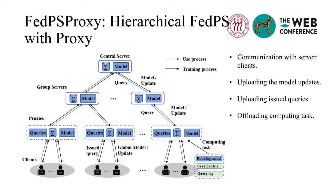Under this layered model, the operations are as follows. Communicating with server or clients: the central server cannot directly connect to the clients, but through group servers and proxies. Proxies are much fewer than clients, and there are a series of group servers responsible for communication and processing, thus solving the communication bottleneck. Uploading the model updates: when a client uploads the parameter updates, it first sends the updates to the proxy for aggregation, then the proxy uploads the aggregation to the group server, breaking the link between the updates and the user on the server side, avoiding user privacy leakage. Uploading issued queries: the clients under a proxy upload their queries to the server through the same proxy, which hides each single user in a group of users and protects user privacy.